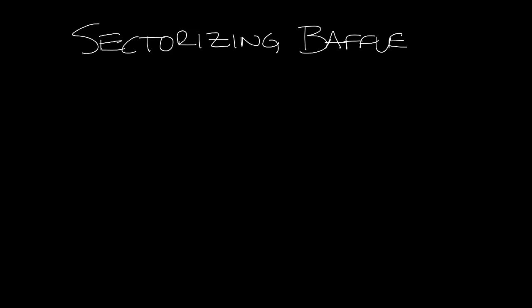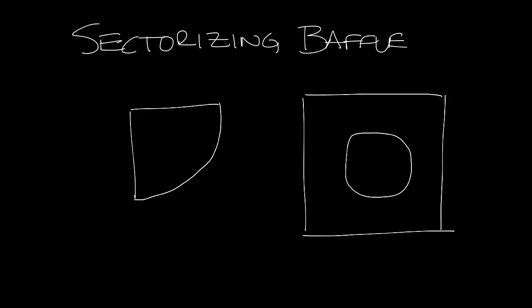The sectorizing baffle looks kind of like a piece of pie. Let's draw the back pan of our diffuser here. You would actually take this piece of pie and attach it to the neck of the diffuser, and then that would block off this section of the diffuser and leave only this area around here open for airflow.